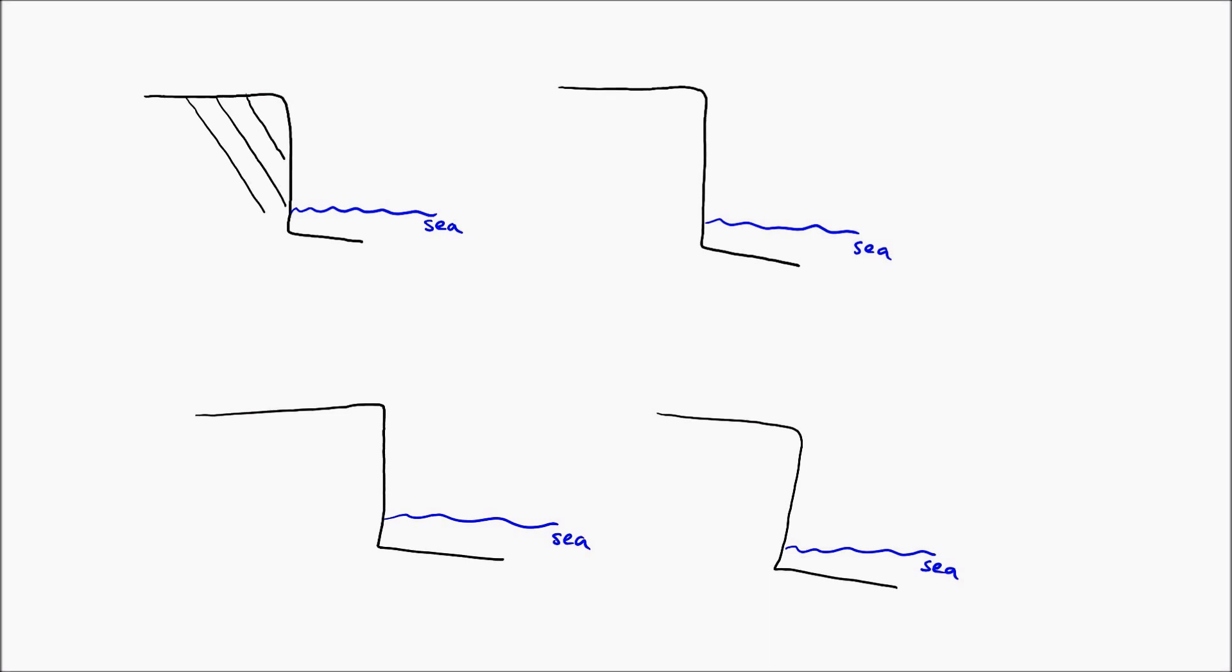As you can see, there are four identical cliffs and what changes is the bedding planes. These are the lines that you can see that I'm drawing on now. We've got four different types of bedding planes that are labeled on this diagram.